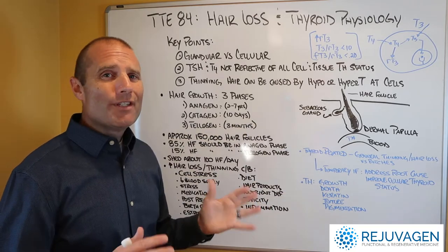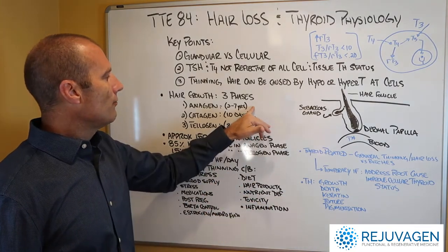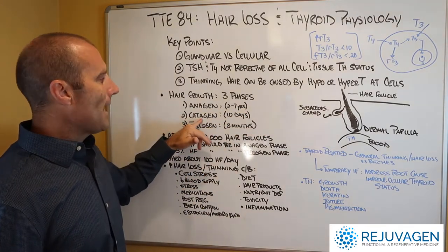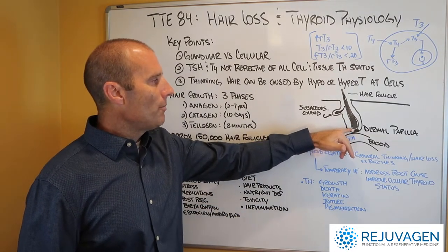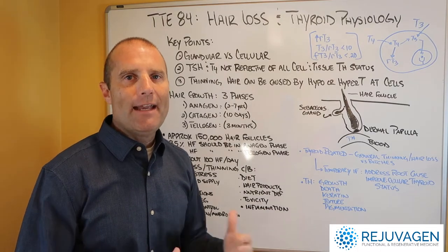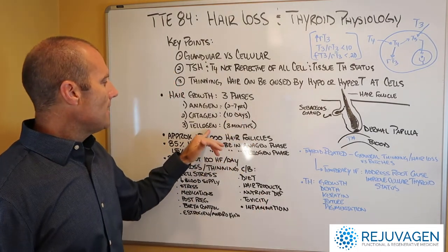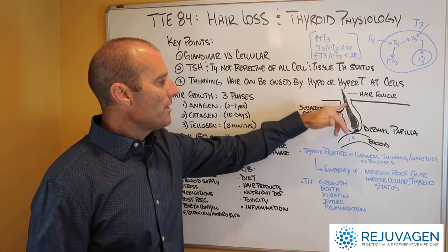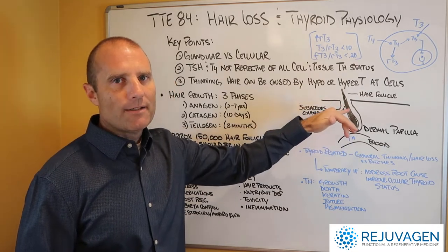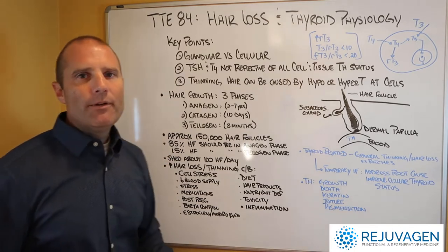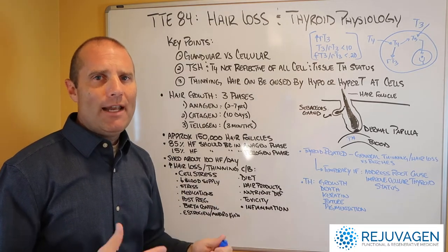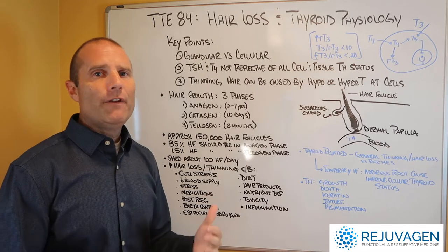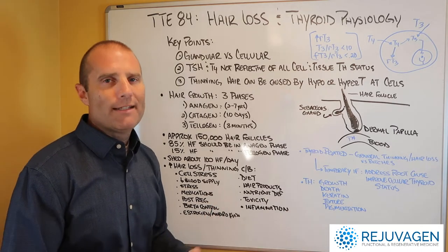That growth phase can last two to seven years. Once the hair follicle reaches the end of that growth phase, we enter into what's called the catagen phase, where the hair follicle separates from the dermal papillae — essentially the beginning of the death of that hair follicle. That usually lasts about 10 days. Then we're in a transition phase called the telogen phase, lasting about three months, until a new hair follicle takes its place. At any one time you have about 150,000 hair follicles; in a healthy state about 85% are in the growth phase and about 15% are in the telogen phase.